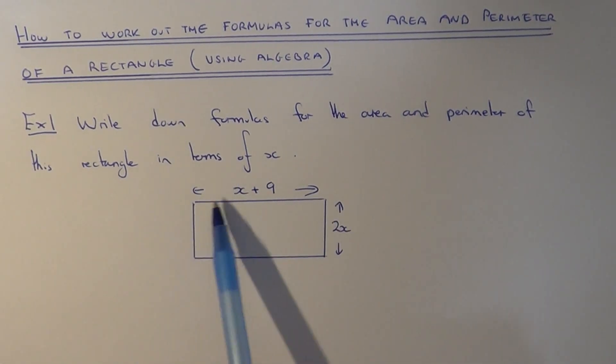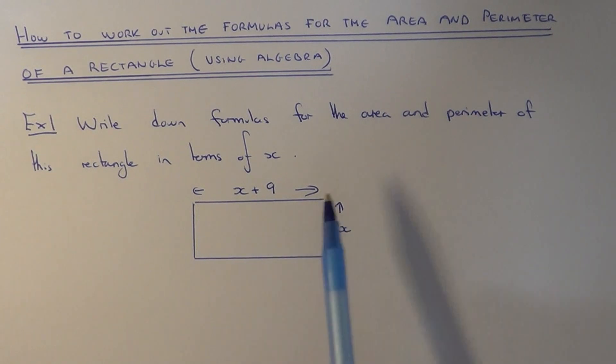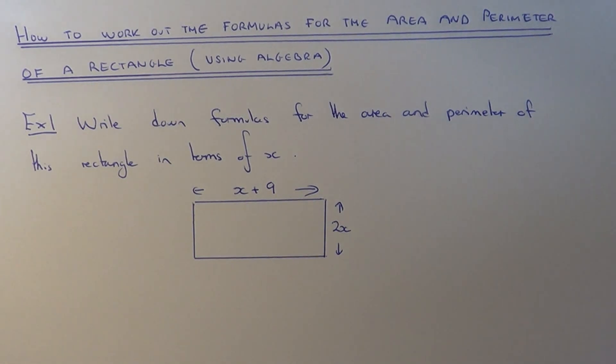So we've got a rectangle which has a length of x plus 9 and a width of 2x. So we need to write down formulas for the area and perimeter.